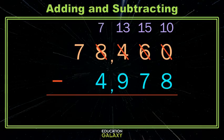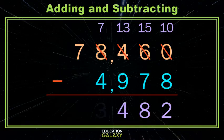And now we're ready to subtract. That easy. Ten minus eight is two. Fifteen minus seven is eight. Thirteen minus nine is four. Seven minus four is three. And now here in the ten thousands, I have a seven on top and I have nothing on the bottom. So seven minus nothing is exactly seven. Pretty easy, right?